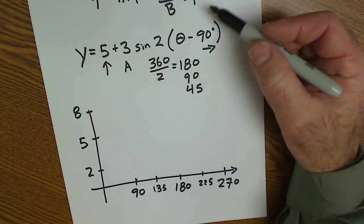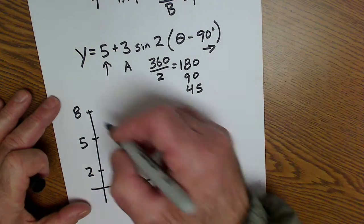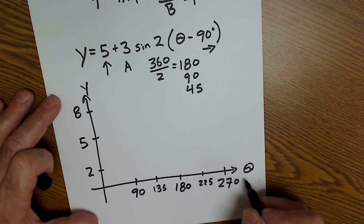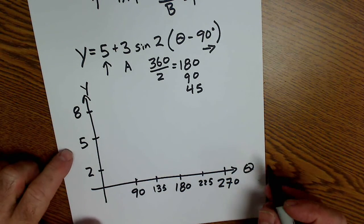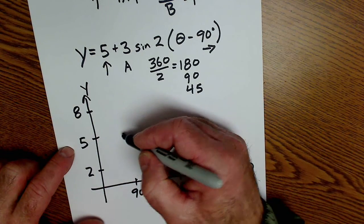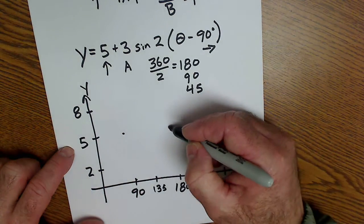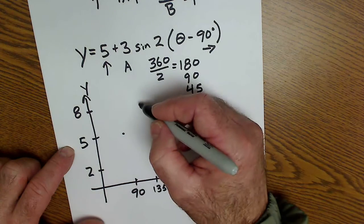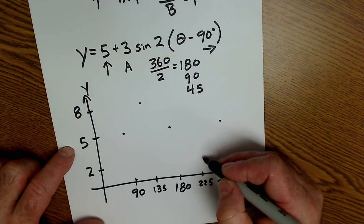So step 1, mark up your equation. Step 2, label your y-axis. Step 3, label the horizontal axis. Step 4, put in critical points. It's a sine graph, so at the first point, it's in the middle. At 180, it's in the middle, and at the end, it's in the middle. At the first quarter, it's up, and the third quarter is down.